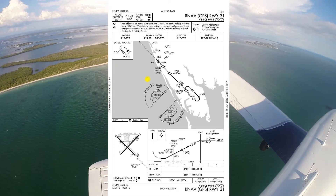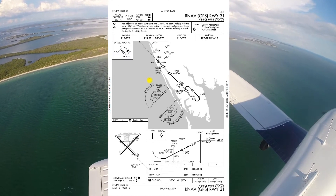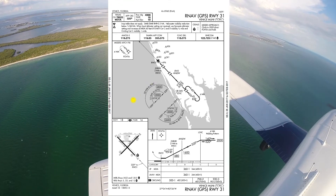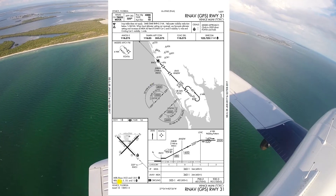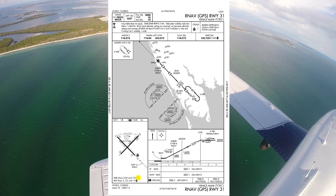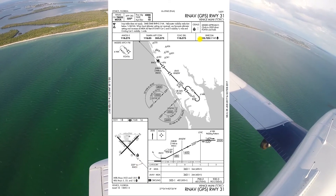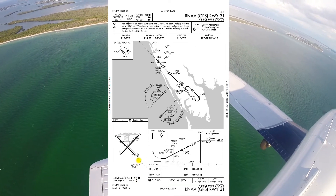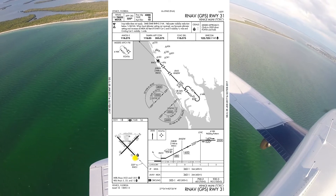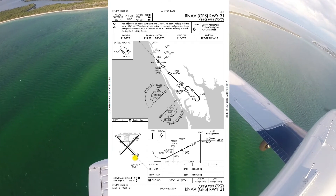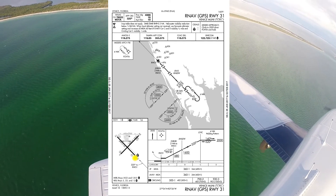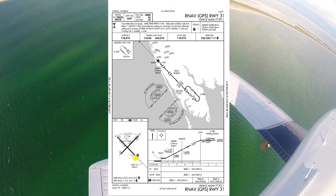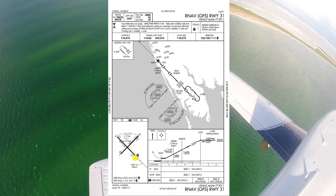After the missed approach brief, then we'll talk about our approach lighting and runway lighting. So we've got MIRL — medium intensity runway lighting on runway 31 — and we have ODALs for our approach lighting system with a PAPI on the left. Especially important to brief that if it is dusk, dawn, or nighttime and you're shooting a visual approach.